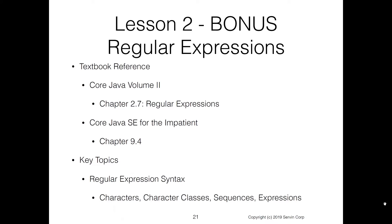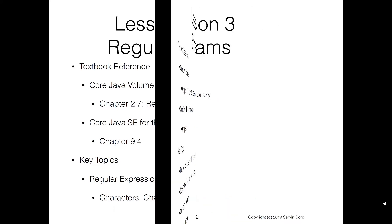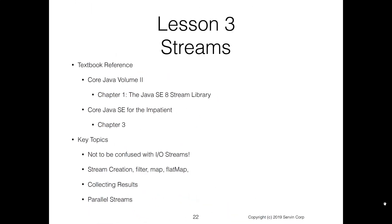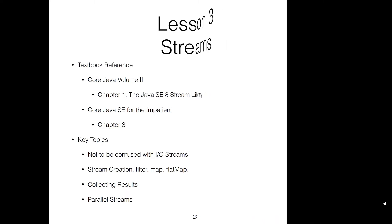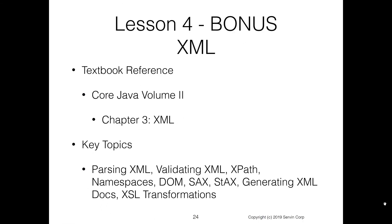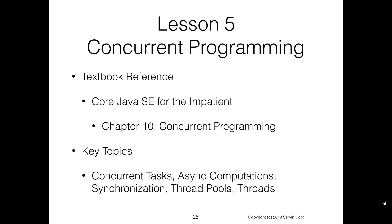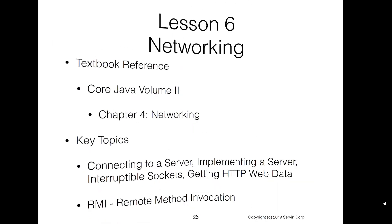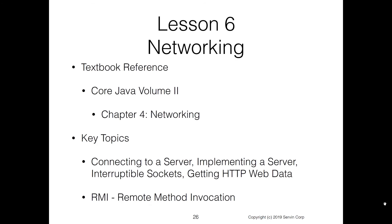Lesson two also has a bonus section on regular expressions. In lesson three, we look at Java streams — not to be confused with I/O streams; this is a way you can use streams to do filtering and mapping. Lesson four covers native methods, showing how you can call a C function from Java, with a bonus section on XML. Lesson five has concurrent programming. Lesson six covers networking: connecting to a server, implementing a server, and even remote method invocation.